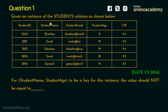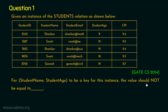A relation is given — the name of the relation is Students, with rows and columns. The question is: for student name and student age to be a key for this instance, the value should not be equal to dash. This question was asked in GATE Computer Science 2014. Your 20 seconds starts now.